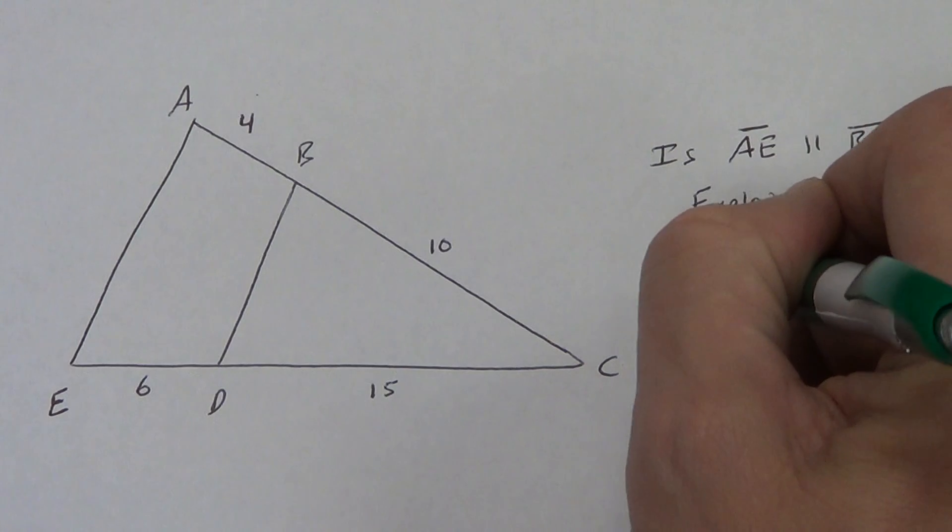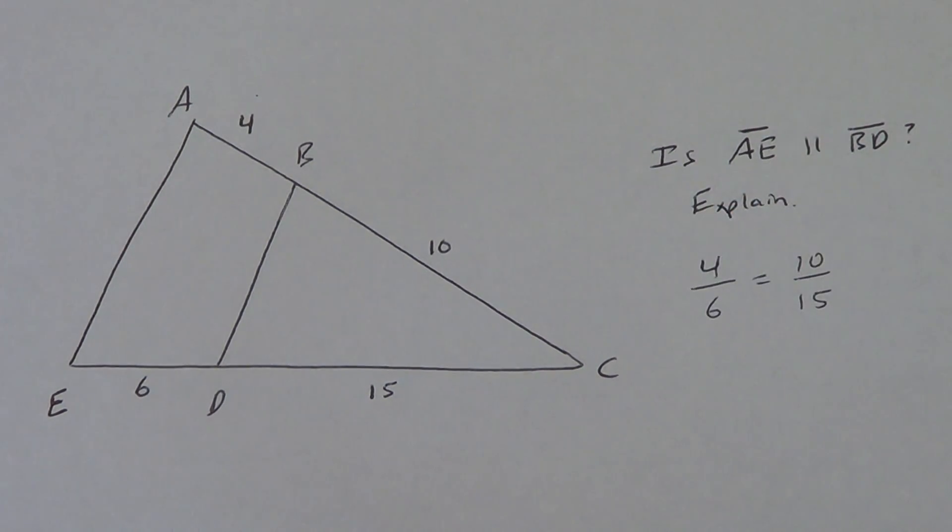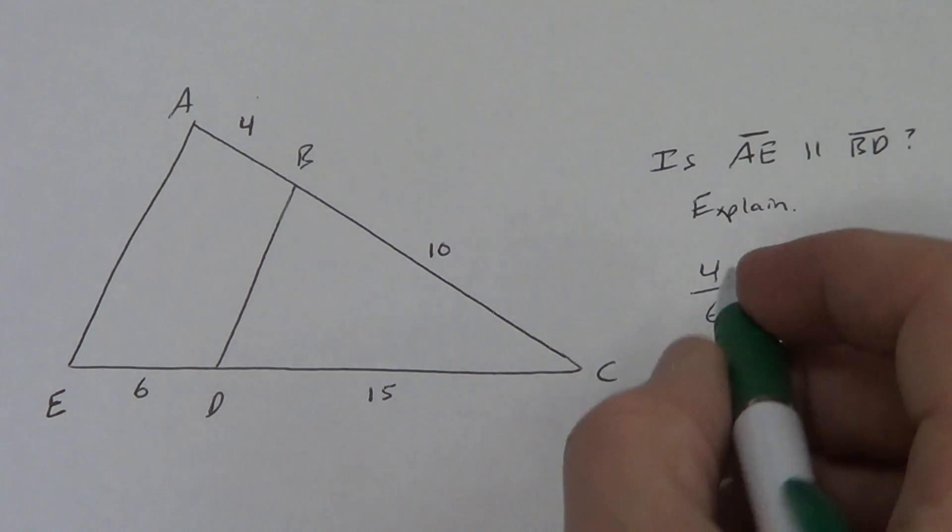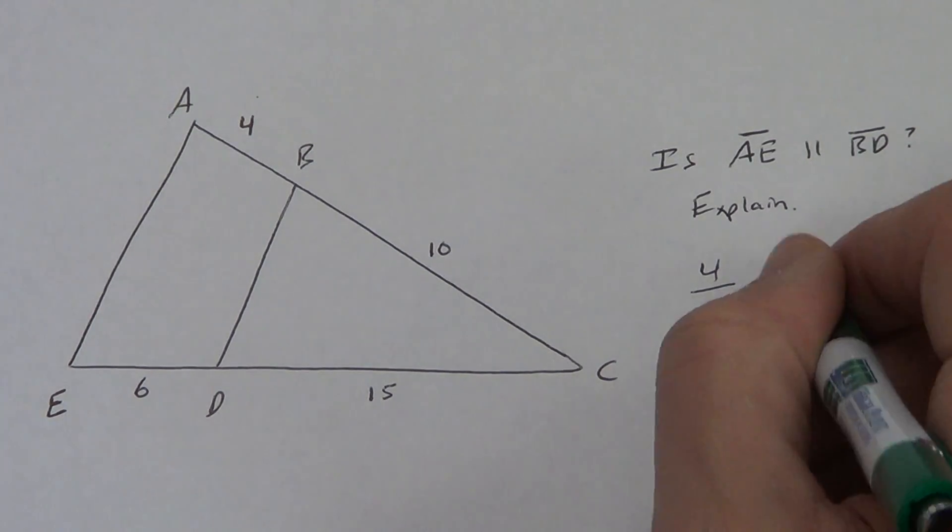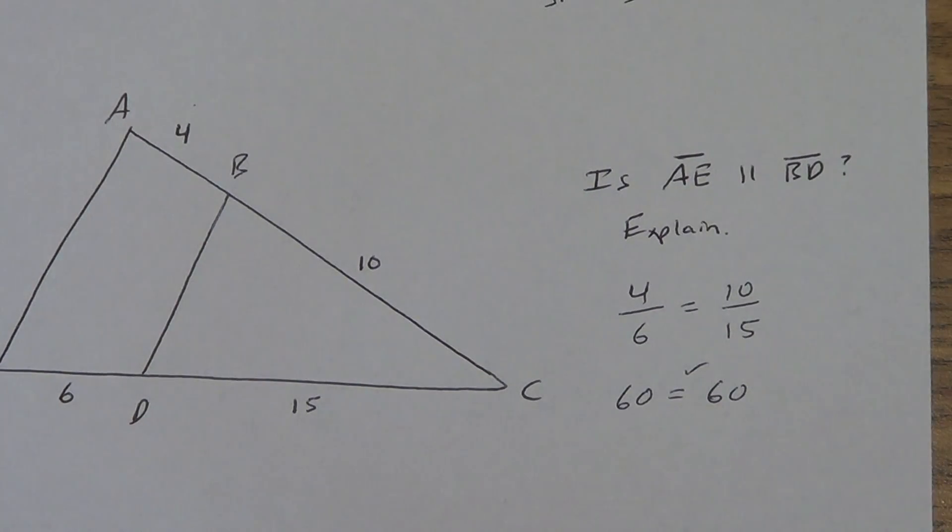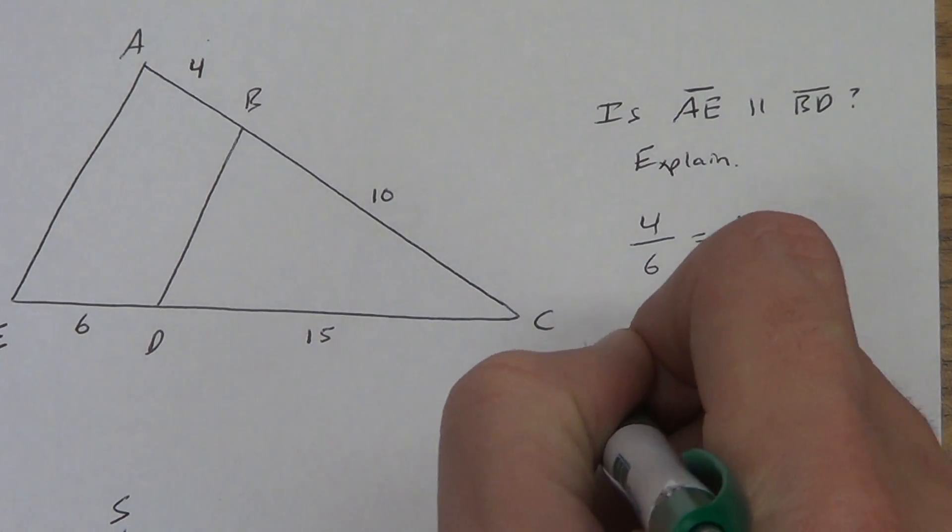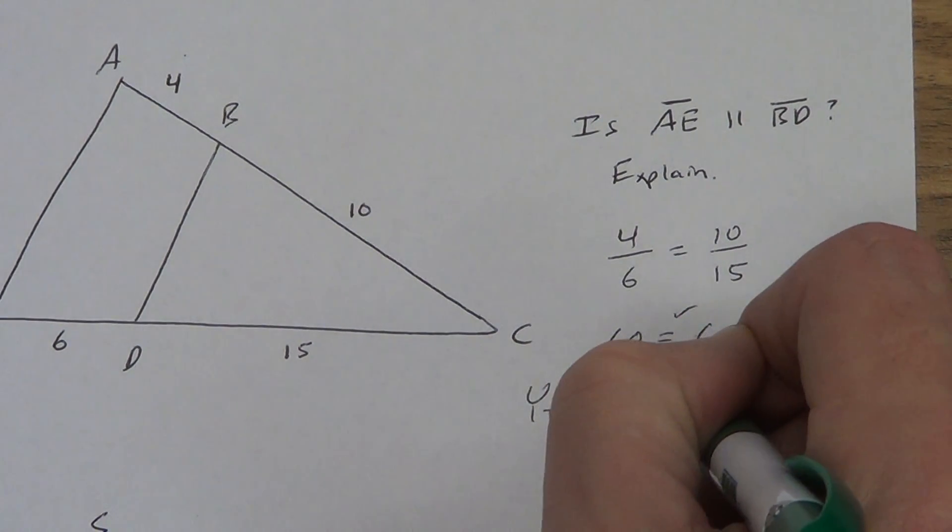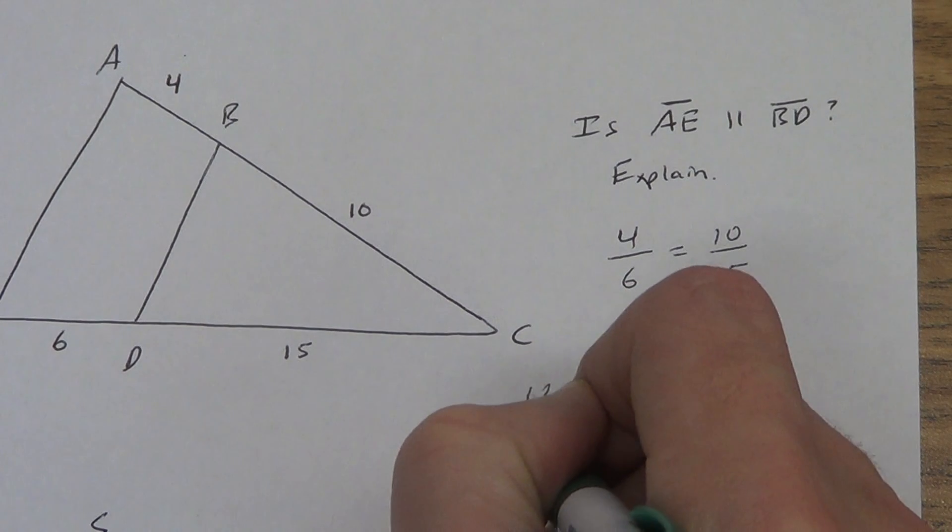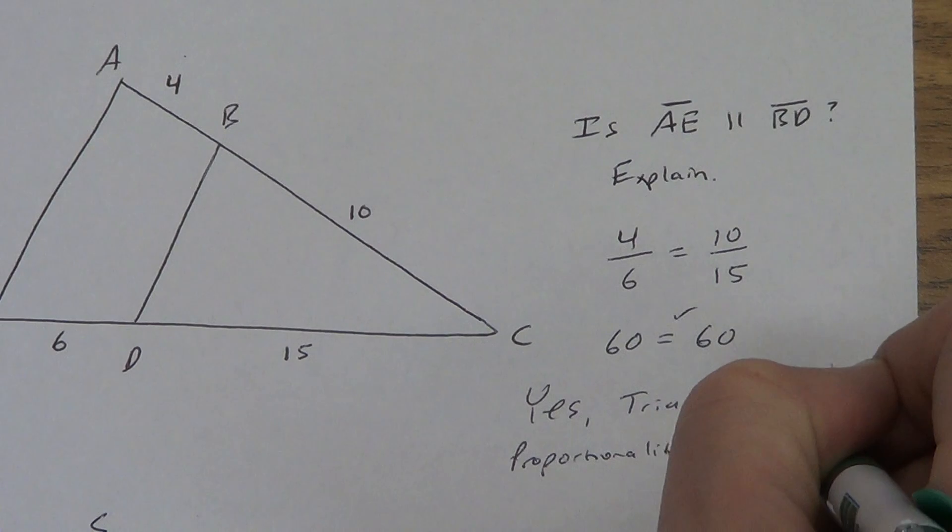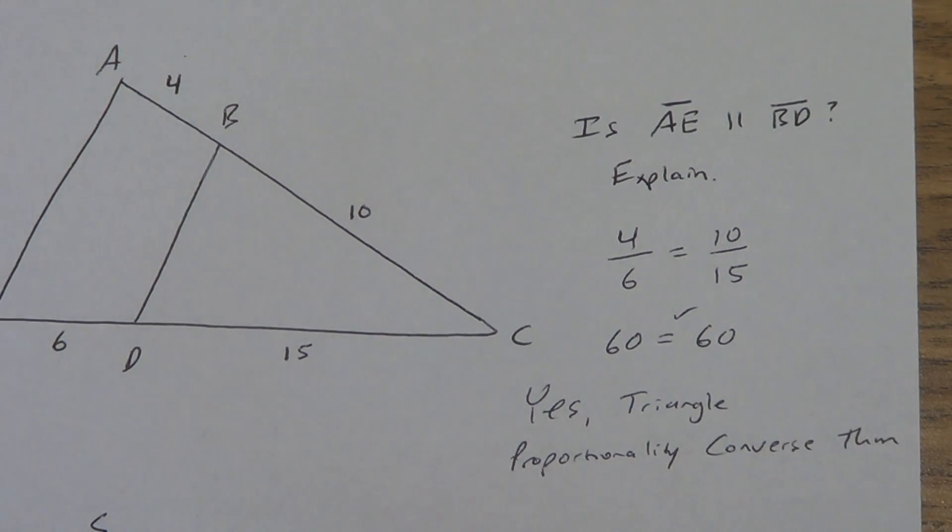We're going to solve it. We're going to set up our proportion: 4 over 6 equals 10 over 15. Now just like before, I don't care whether you reduce or cross multiply. I like the cross multiply and I think it goes really fast. 4 times 15 is 60. 6 times 10 is 60. It works.